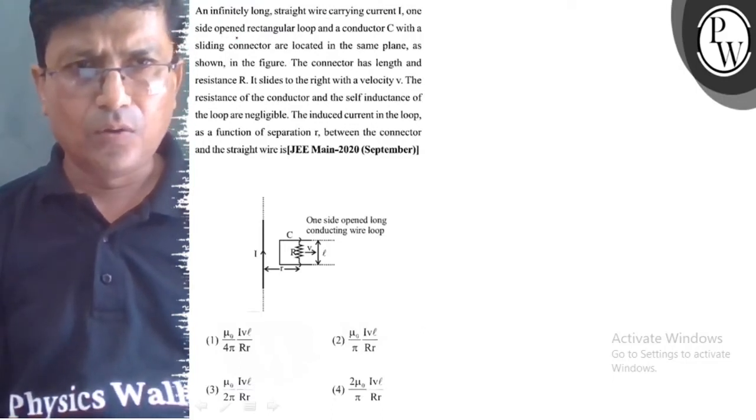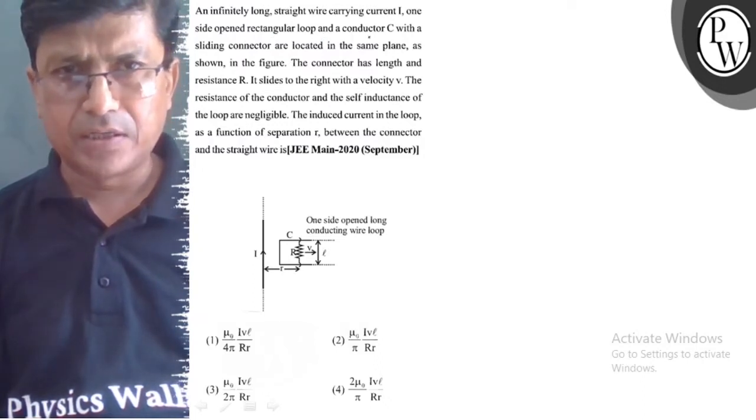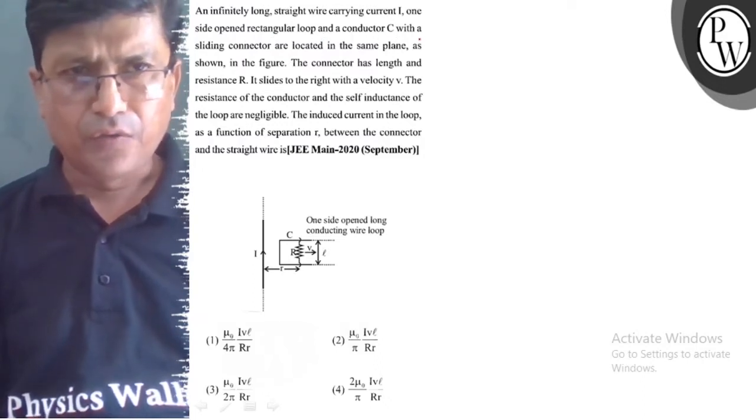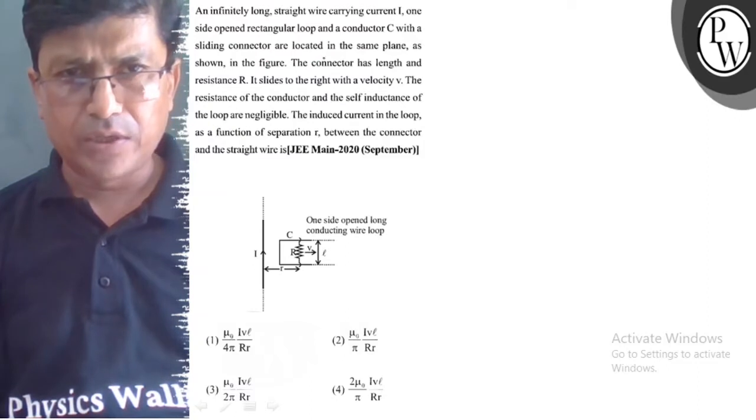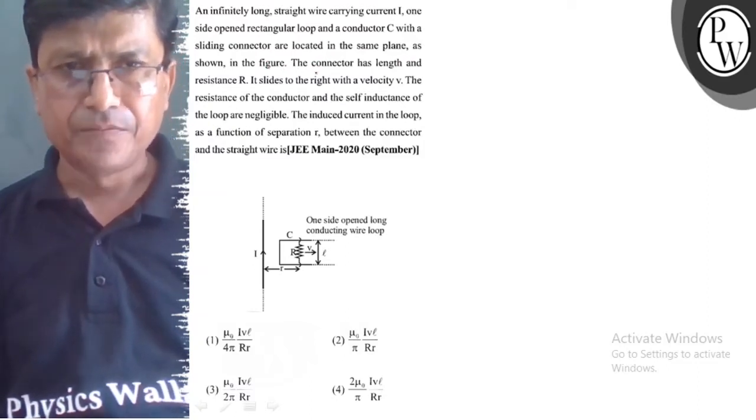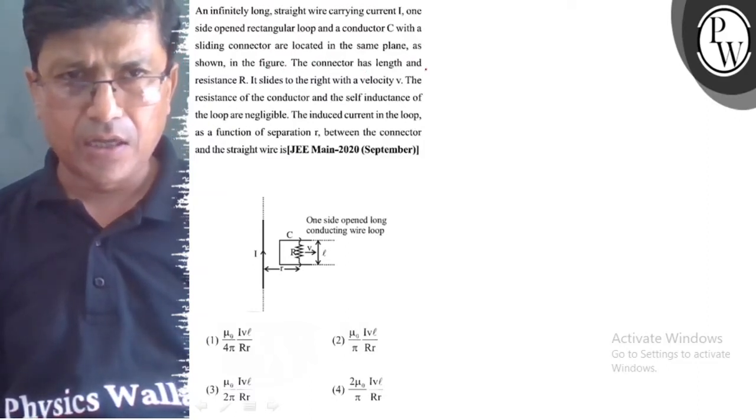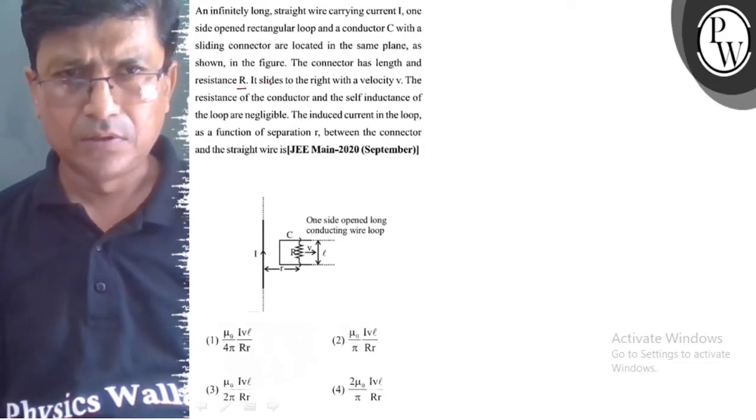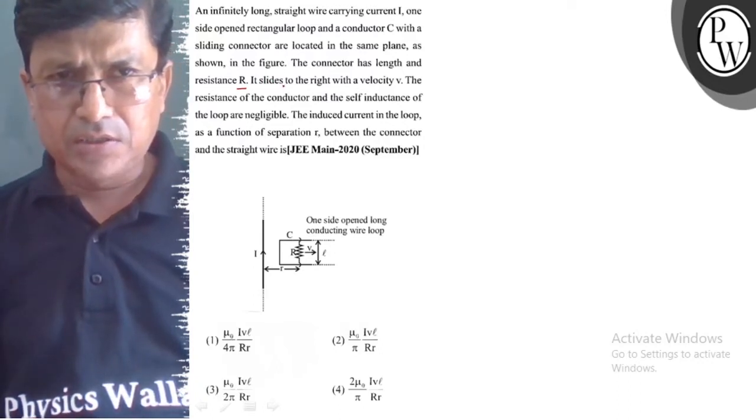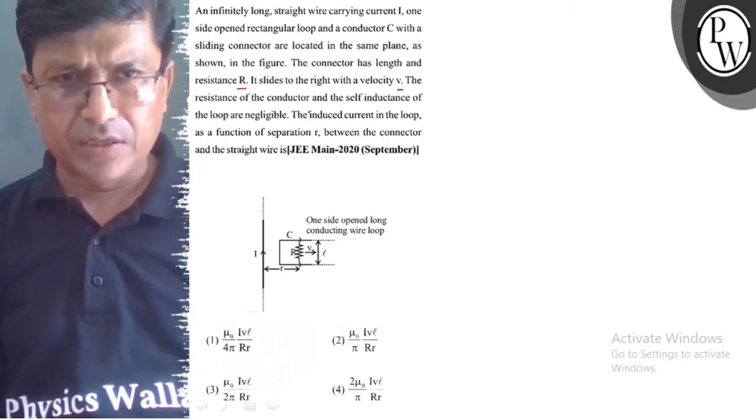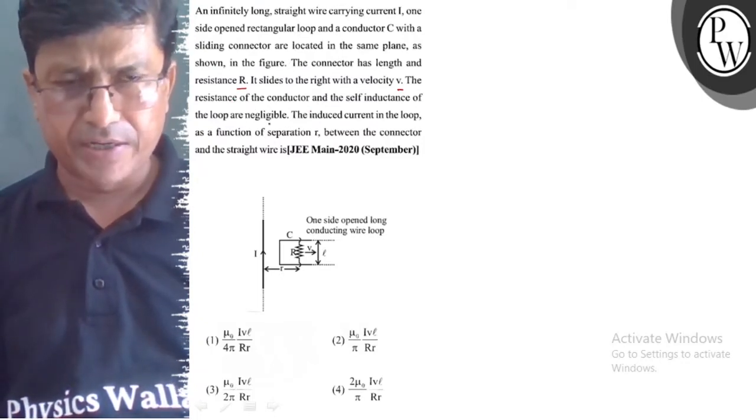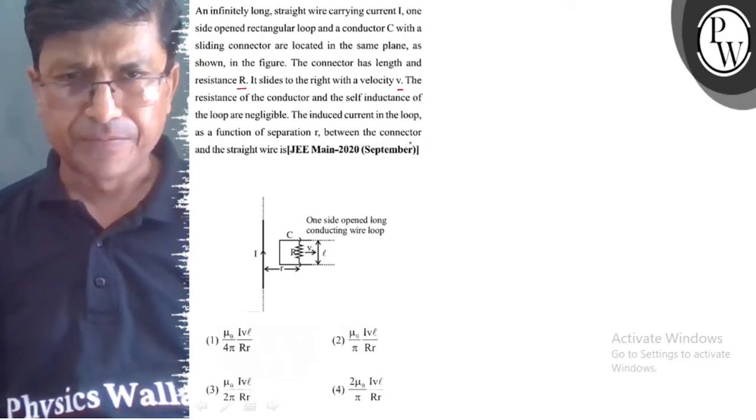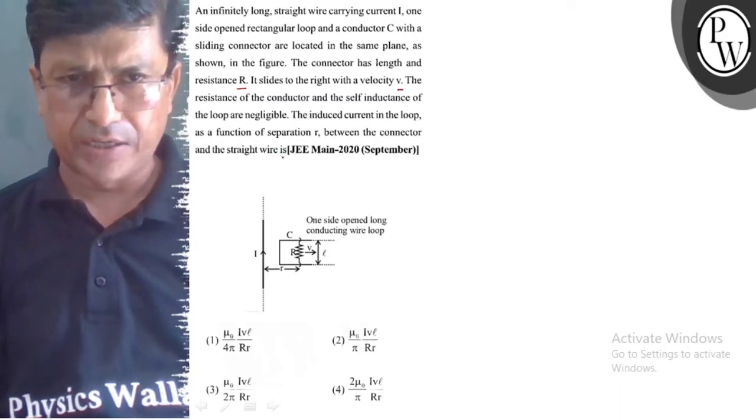One side opened a rectangle loop and a conductor C with a sliding connector are located in the same plane. As shown in the figure, the connector has length L and resistance capital R. It slides to the right with velocity V. The resistance of the conductor and the self-inductance of the loop are negligible. The induced current in the loop as a function of separation r between the connector and the straight wire is...